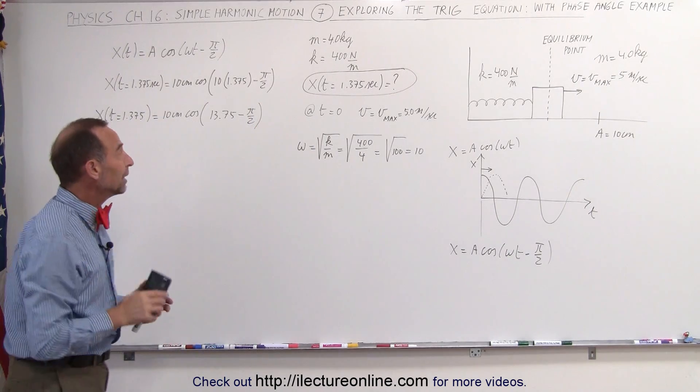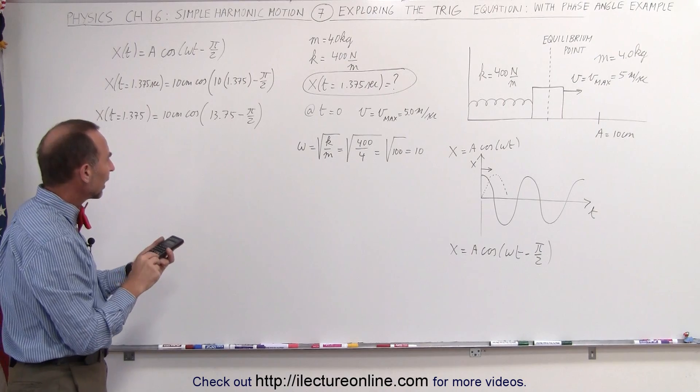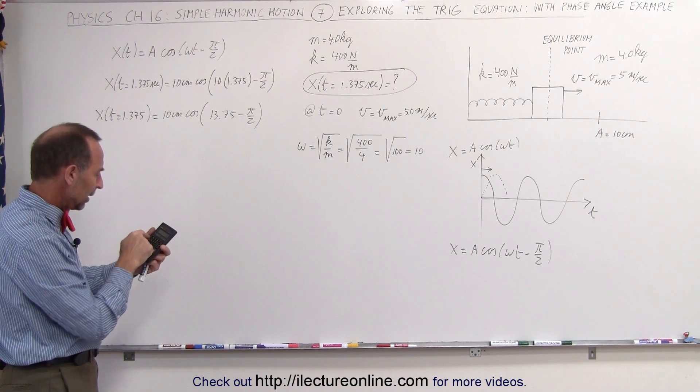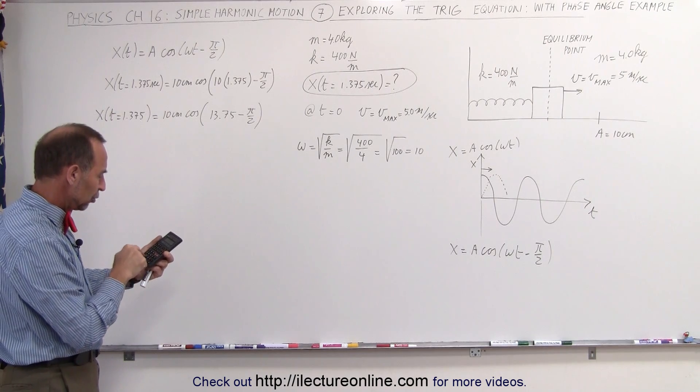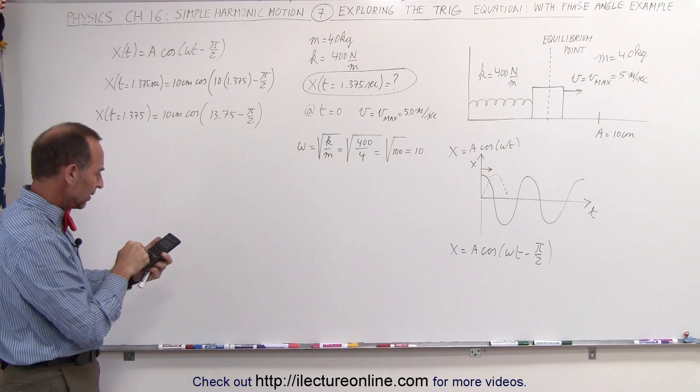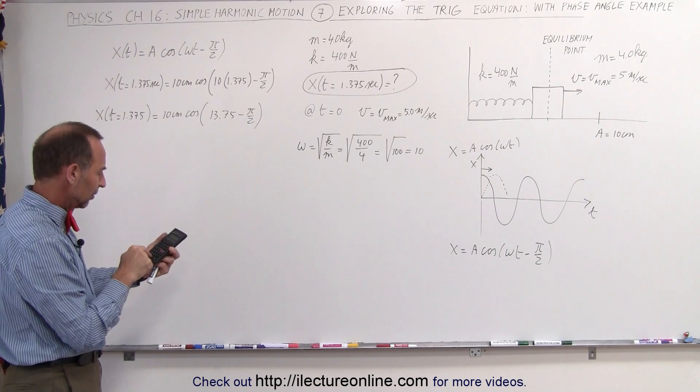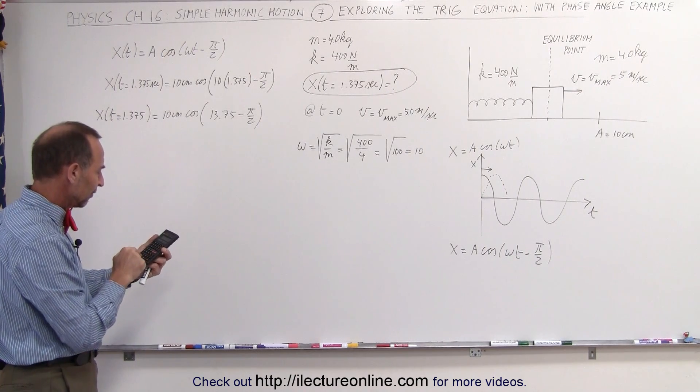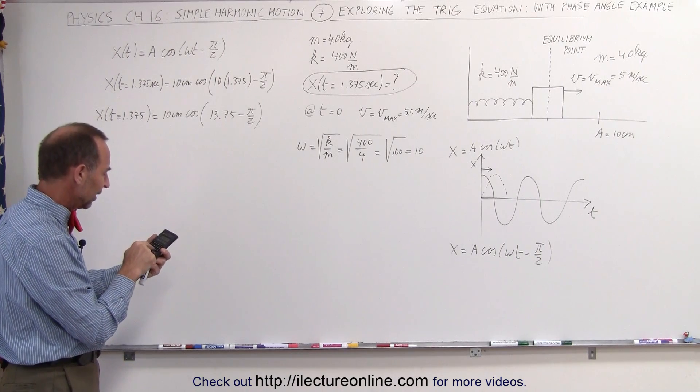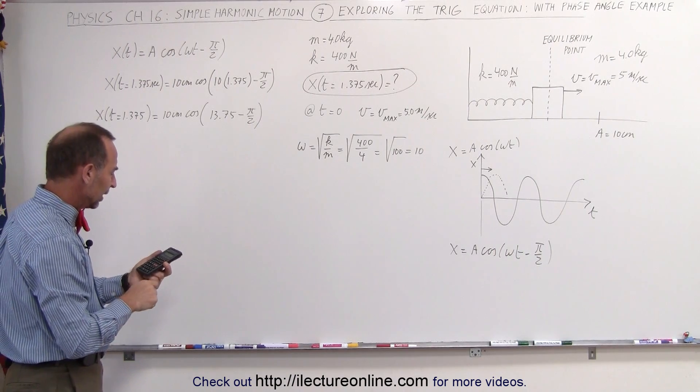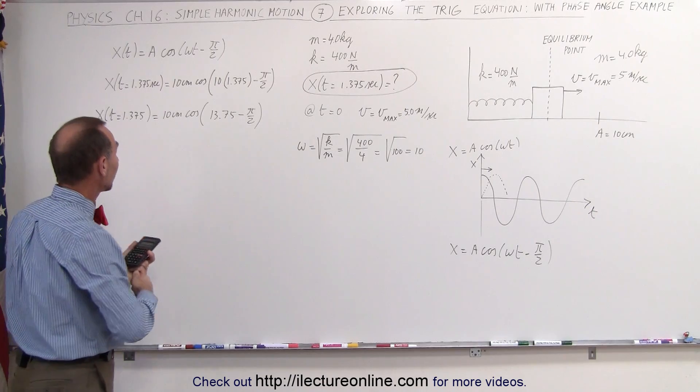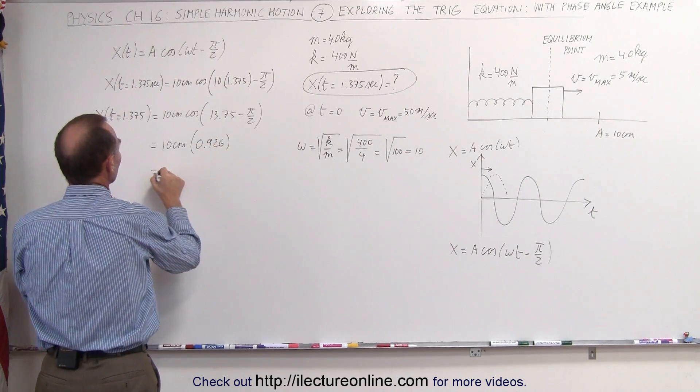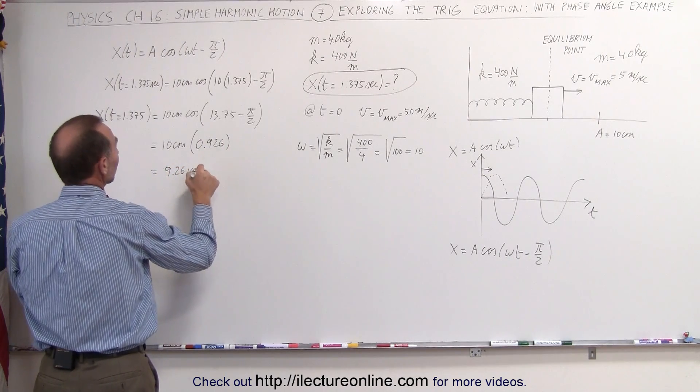Remember the calculator should be in radian mode to get the correct answer here. 13 point, actually I'm going to take pi, pi divided by 2, make that a minus sign and add to that 13.75, then take the cosine of that and I will get 0.926, which is equal to 9.26 centimeters.